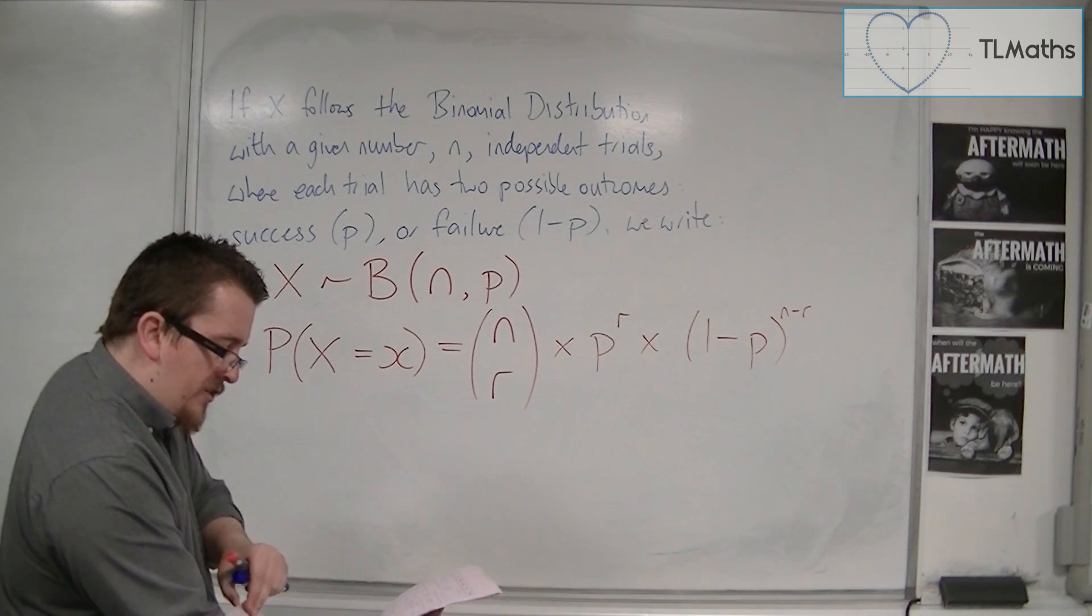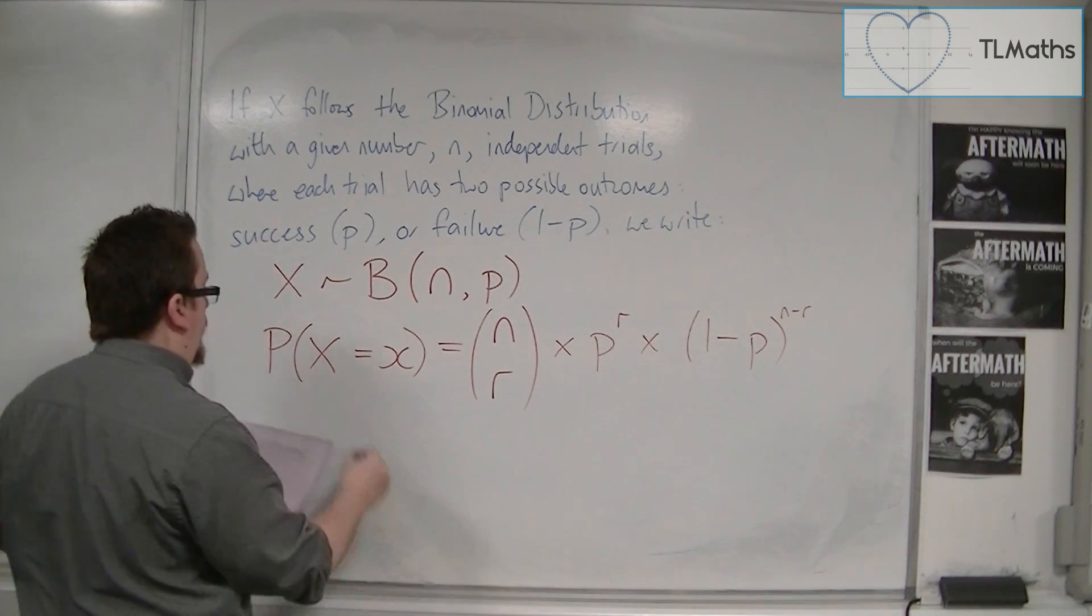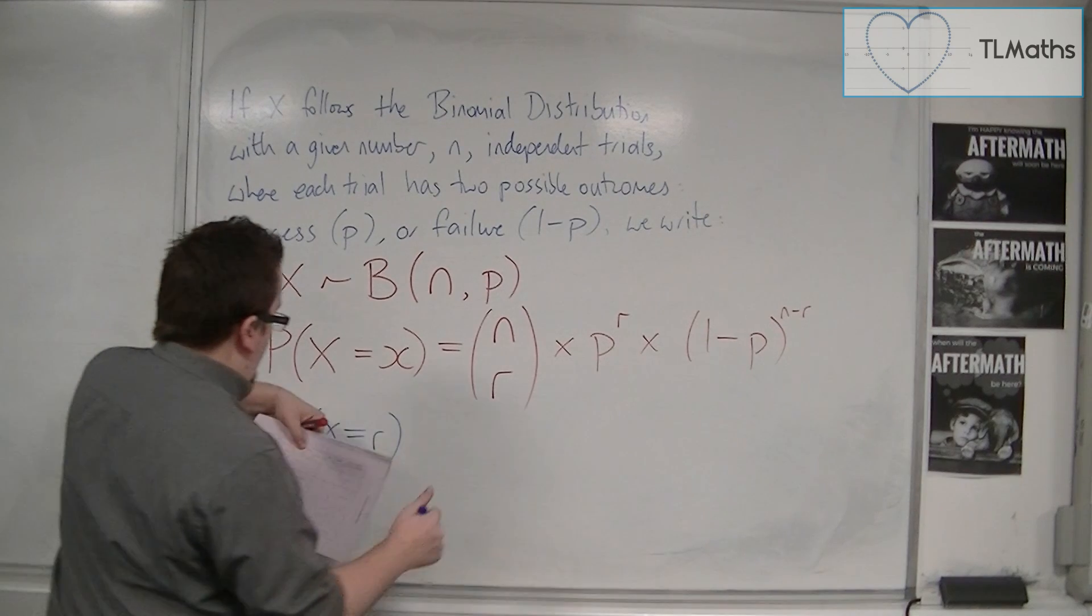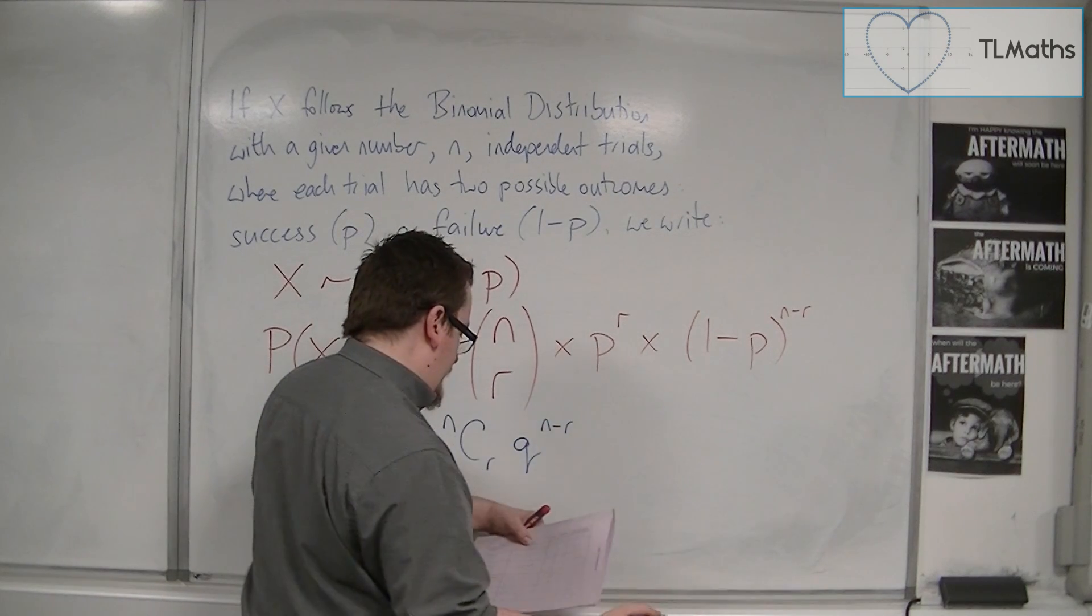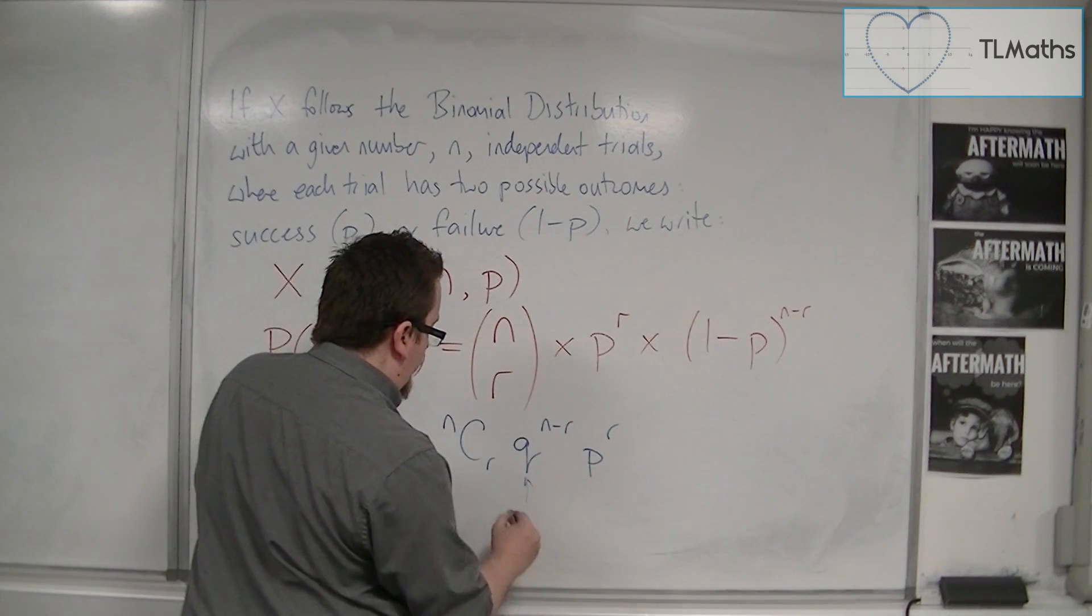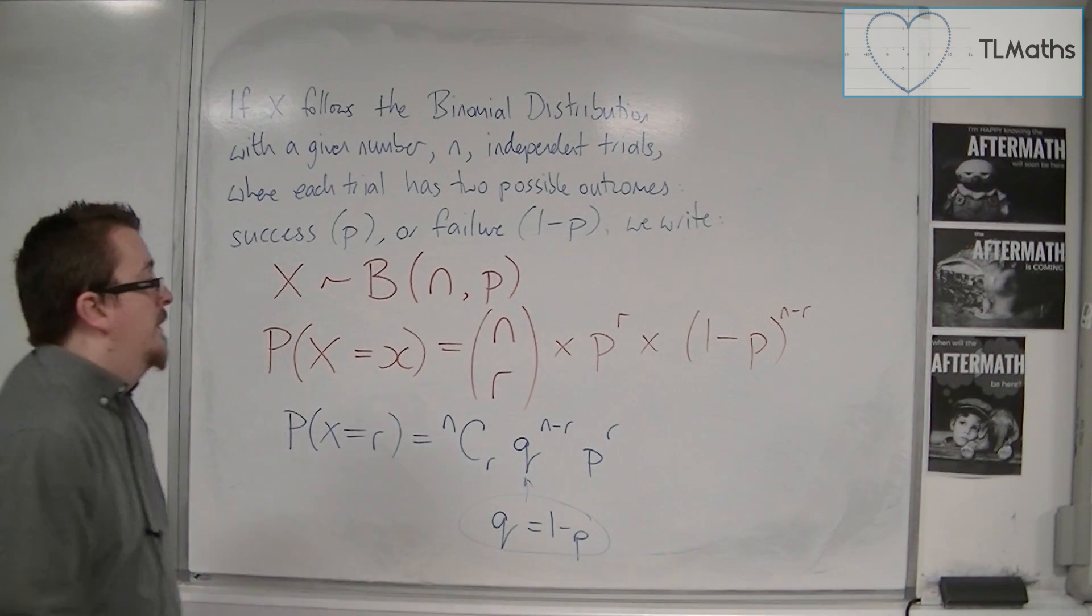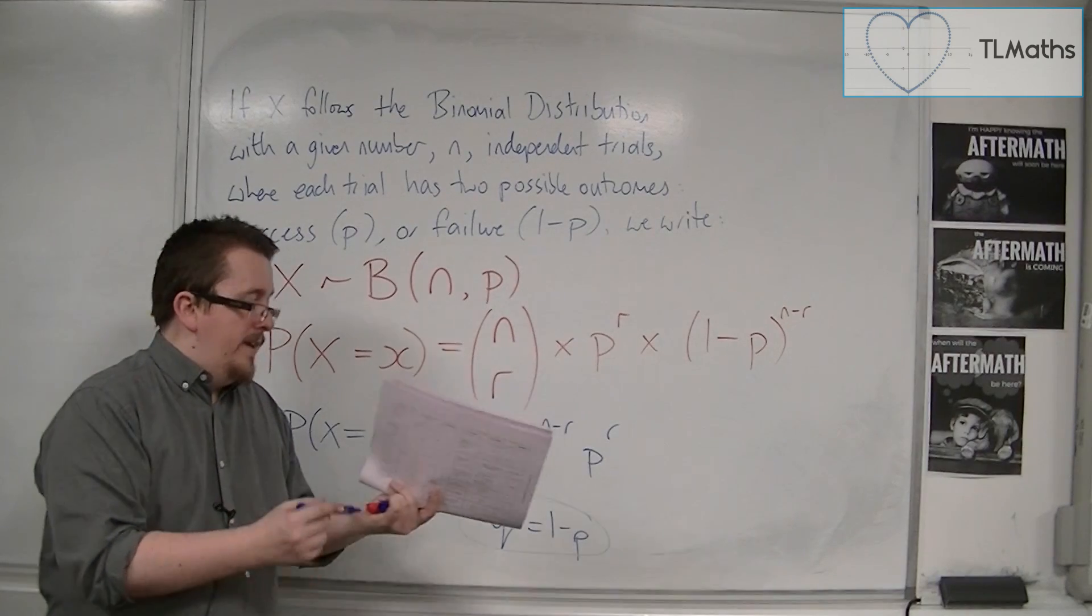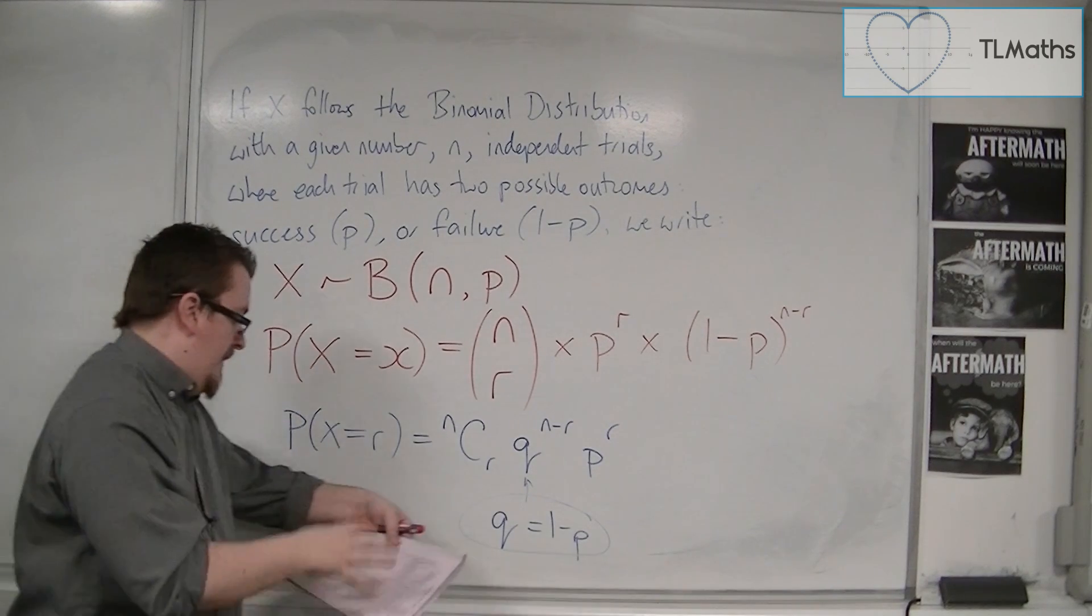So on page 9 of the formula booklet, you're told that the probability of X equals r is equal to nCr times q to the n minus r times p to the r. Now in this case, q is just 1 minus p, so instead of writing 1 minus p, they're writing q. They've just reordered these two things, and they've written this as nCr rather than n choose r in a bracket like I've done there. But that's really the only difference, and it is given to you, that's on page 9.